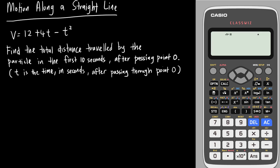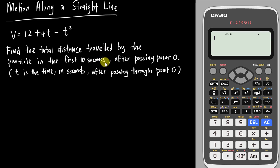Normally this kind of question is formatted in your exam paper. The question will give you an equation — let's say in this case they give you an equation of V, which is velocity equals to 12 plus 4t minus t squared, and they ask you to find the total distance traveled by the particle in the first 10 seconds after passing through O.